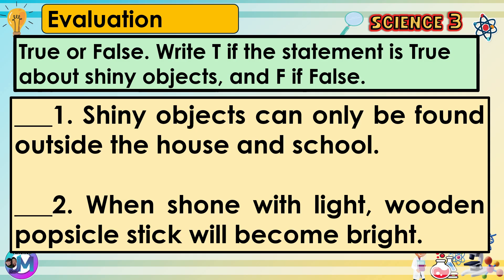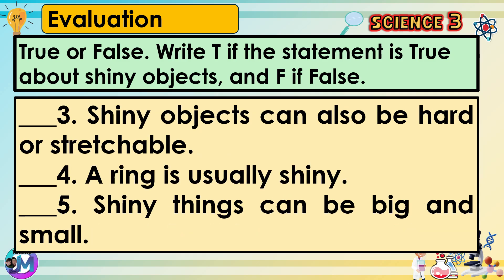True or false? Write T if the statement is true about shiny objects and F if false. 1. Shiny objects can only be found outside the house and school. 2. When shone with light, a wooden popsicle stick will become bright. 3. Shiny objects can also be hard or stretchable. 4. A ring is usually shiny. 5. Shiny things can be big and small.